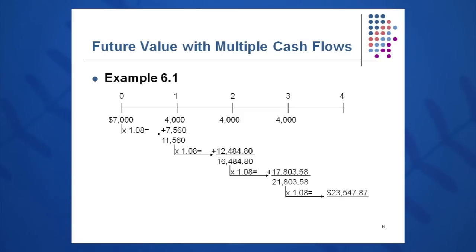To find out what I have at the end of year two, I multiply that amount, that's summation, by 1.08 and I get 12,484.80. Again, I drop down that $4,000 that I'm depositing at the end of year two on December 31st and I get 16,484.80. Multiply that by 1.08 and I get 17,803.58 and I add the 4,000 to that and I have 21,803.58.